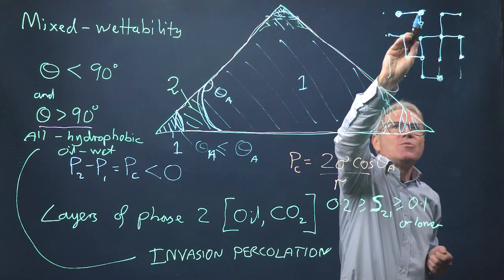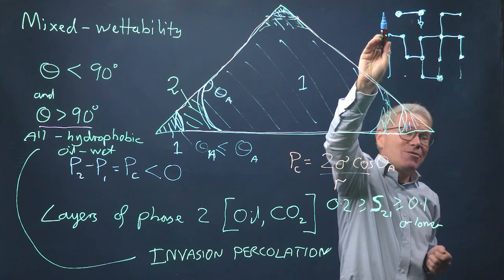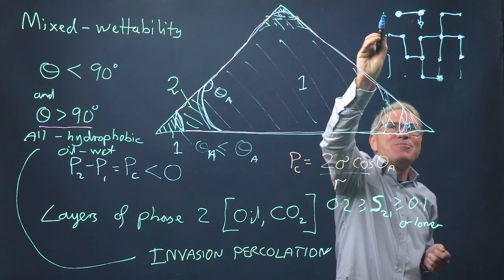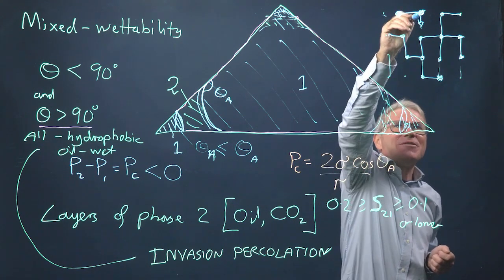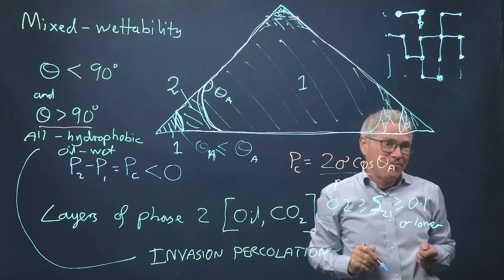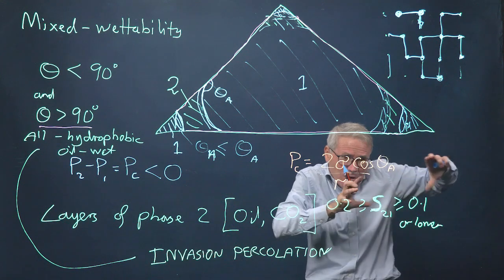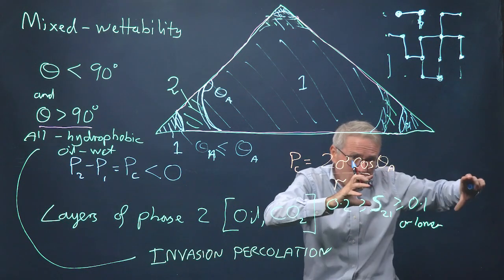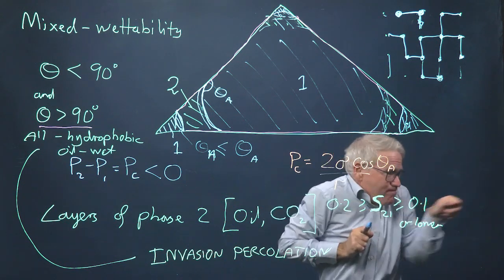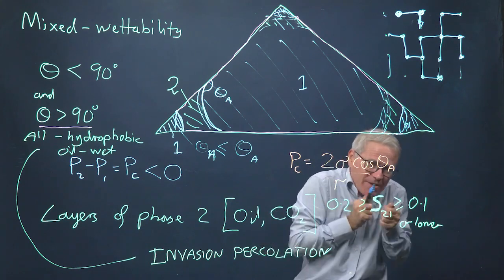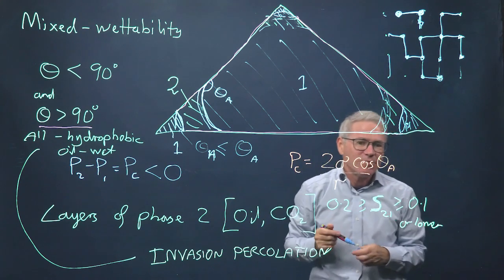So through wetting layers, these layers here, the water can flow, go through here, and then you can have a piston-like advance. So you have a thin layer, then you fill the center of the pore space. And from there, you can push. It's as though you've mustered your water in the center of the pore space, and from then, it can push out into the wide regions.